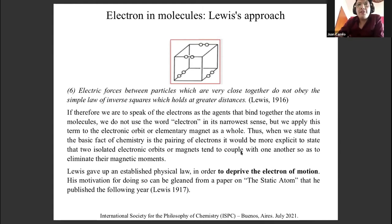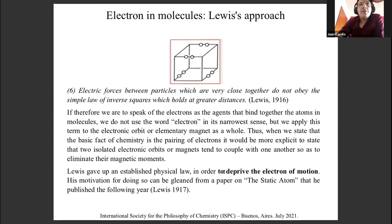His motivation for doing so can be understood in his 1917 paper, 'The Static Atom.' The aim of that paper was to discuss precisely the relationship between the atomic structure and the valence bonds by which atoms are regarded as tied together to form the more complicated structure of molecules. He wanted to justify his fundamental postulate that the atom is essentially static.